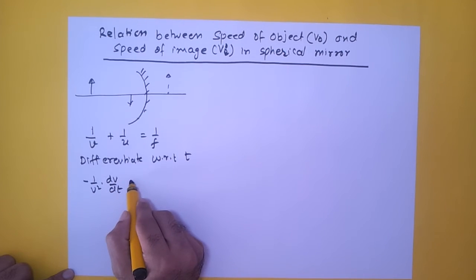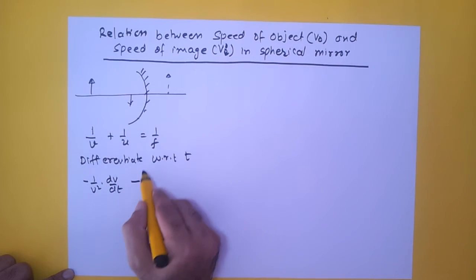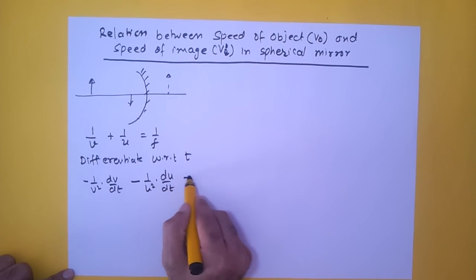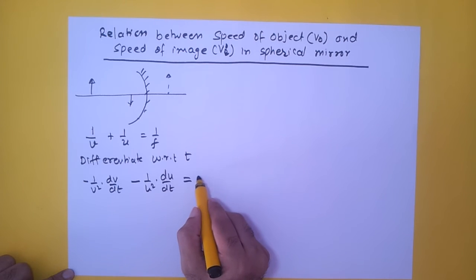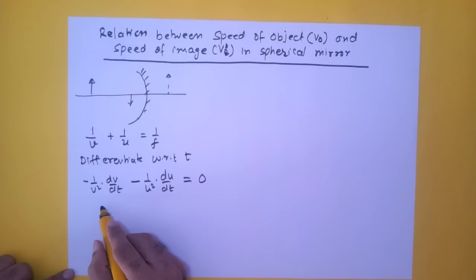Minus 1 upon u square du by dt is equal to differentiation of f. F is constant for a given mirror, it does not change, so we have zero. Therefore I'll get...